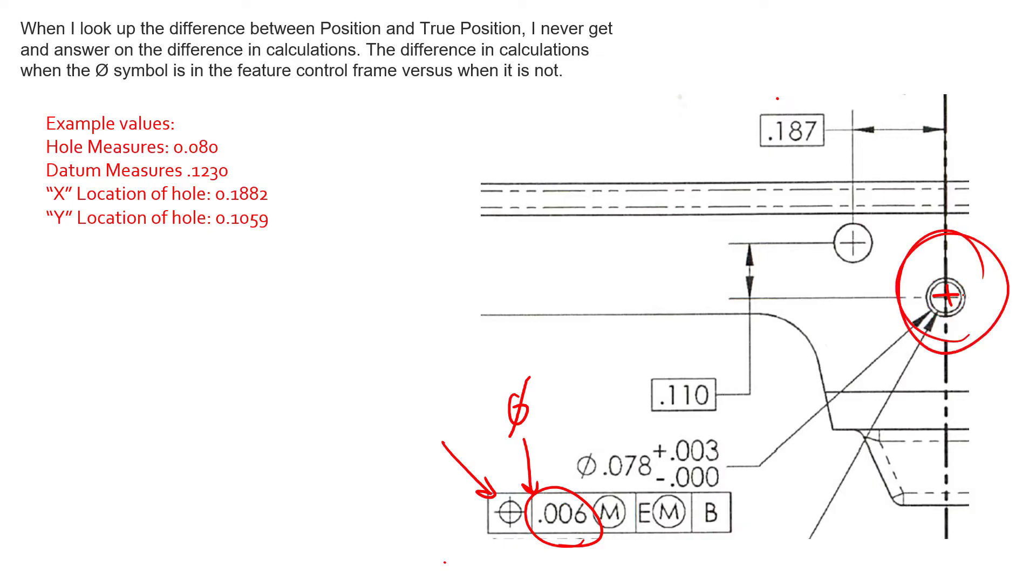And the true position is the bullseye, or the ideal location that this hole should be at. Obviously, we'll measure away from that.